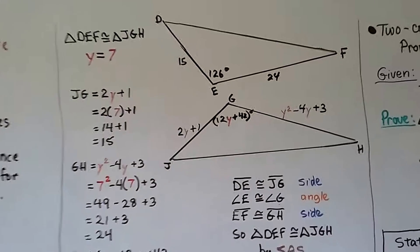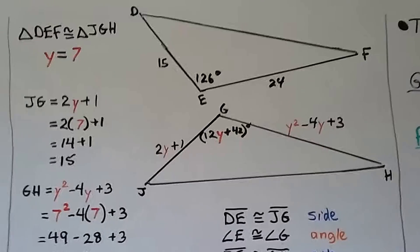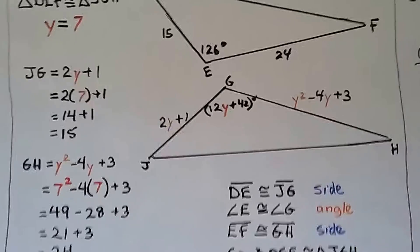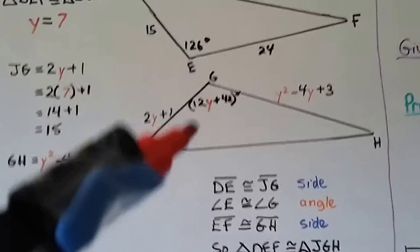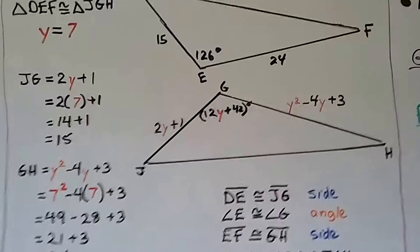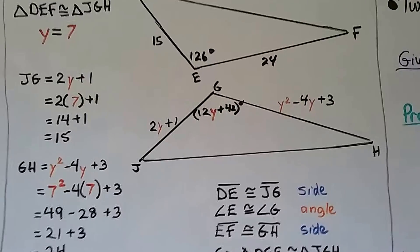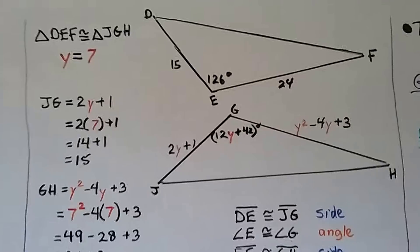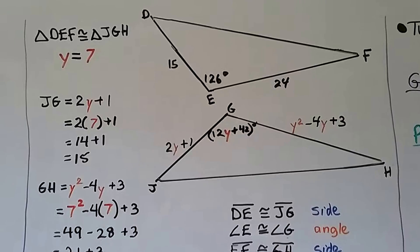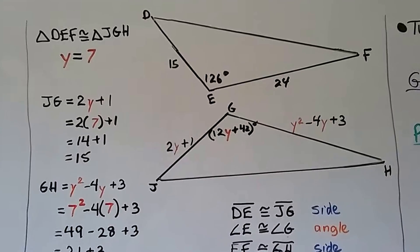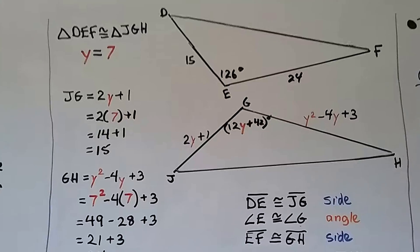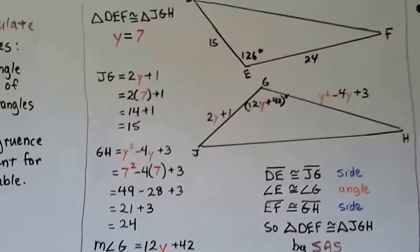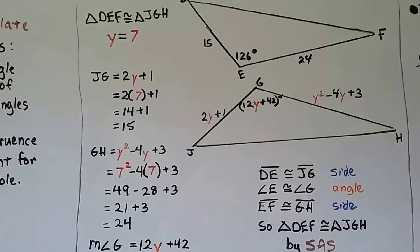Now we have two more triangles. This one says this side is 15, that angle is 126, and that side is 24. This one said this side is 2y plus 1, this angle is 12y plus 42, and the other side is y squared minus 4y plus 3. It's telling us that triangle DEF is congruent to triangle JGH, and y equals 7. So JG is 2y plus 1, which means it's 2 times 7 plus 1, which is 14 plus 1, so that's 15.